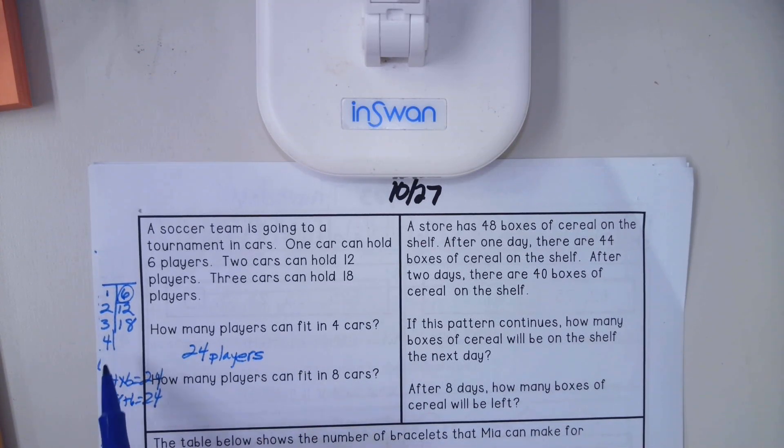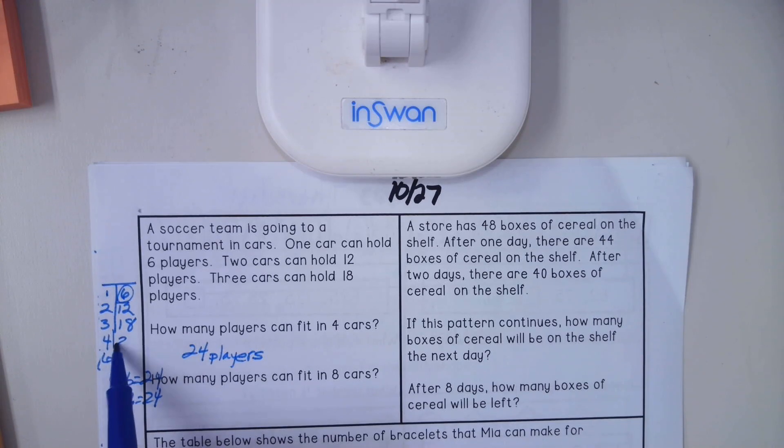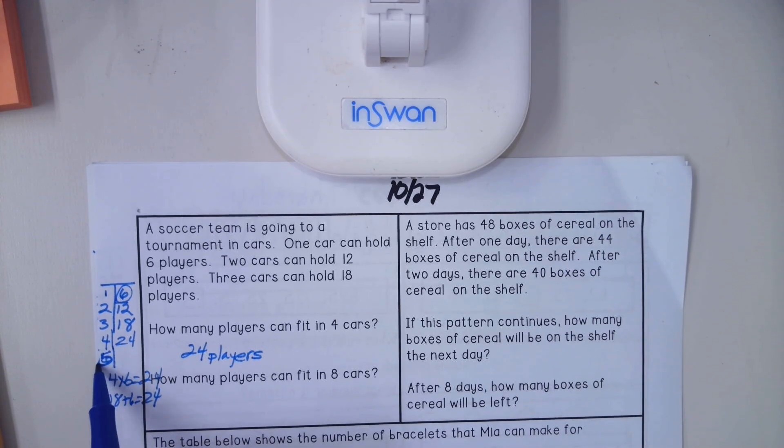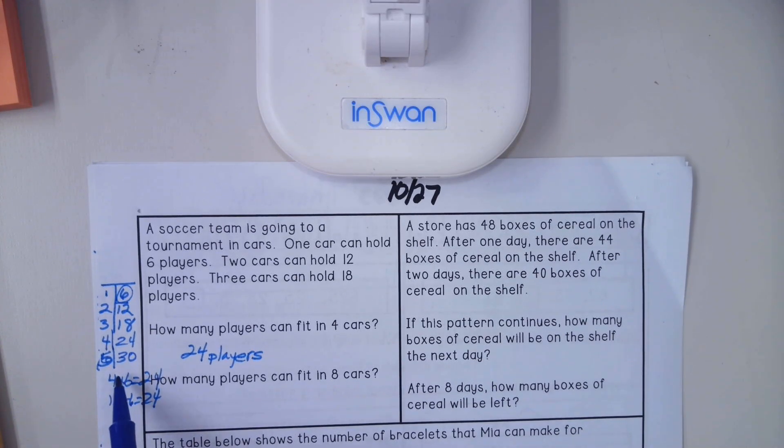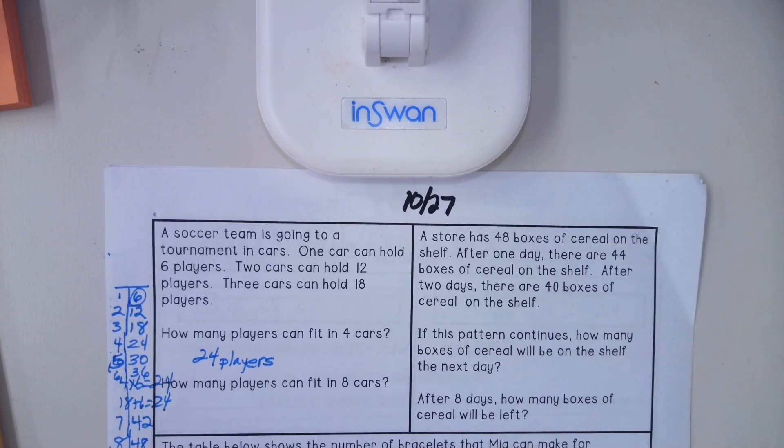Now it's asking how many players can fit in eight cars. We know that four players is 24. Five players, 24 plus six would be 30. Six players would be 36. Seven players would be 42, and eight players would be 48.